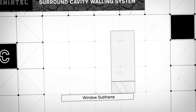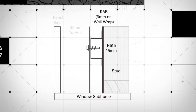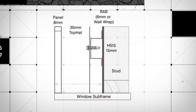Cementel recommends fitting a subframe with windows. Allow sufficient depth to the window subframe to accommodate the thickness of supporting framing, internal linings, rigid air barrier if used, as well as allowing around 58mm to accommodate the depth of the top hats and panel.